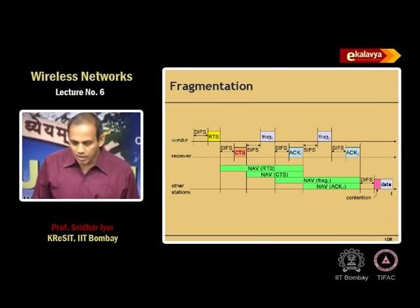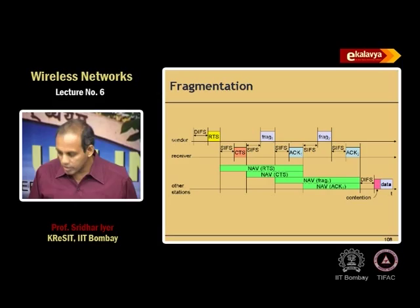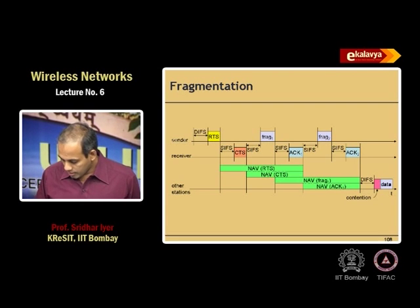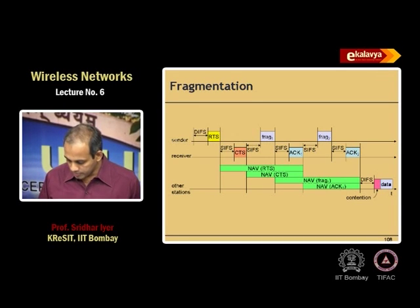There is also a notion of fragmentation, which is a straightforward extension of the RTS-CTS mechanism. The question is how long a packet can be transmitted on a wireless medium. Longer packets have less overhead with one RTS-CTS exchange, but longer packets have a higher chance of error. Using fragmentation after RTS-CTS, you send one fragment, then use the same SIFS and ACK mechanism for subsequent fragments. This is called fragmentation in 802.11.